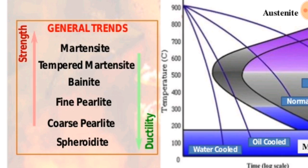Ductility decreases from spheroidite, coarse perlite, fine perlite, bainite, tempered martensite, to martensite.